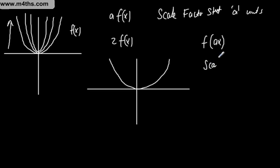So, scale factor, and be careful with this, this is 1/a, and that's parallel to the x-axis. So, if I've got now f(2x), each of these points is going to get twice as close. So, this is going to come in, so it's going to go from there to there, and they're going to get twice as close.